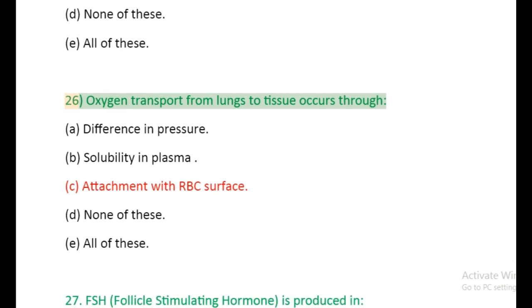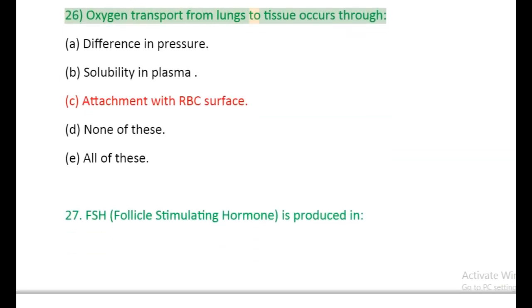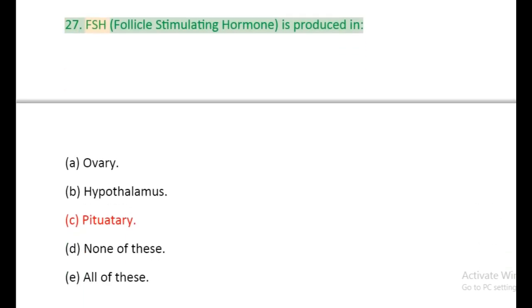Question 26: Oxygen transport from lungs to tissue occurs through: (a) Difference in pressure, (b) Solubility in plasma, (c) Attachment with RBC surface, (d) None of these, (e) All of these. Question 27: FSH (Follicle Stimulating Hormone) is produced in: (a) Ovary, (b) Hypothalamus, (c) Pituitary, (d) None of these, (e) All of these.